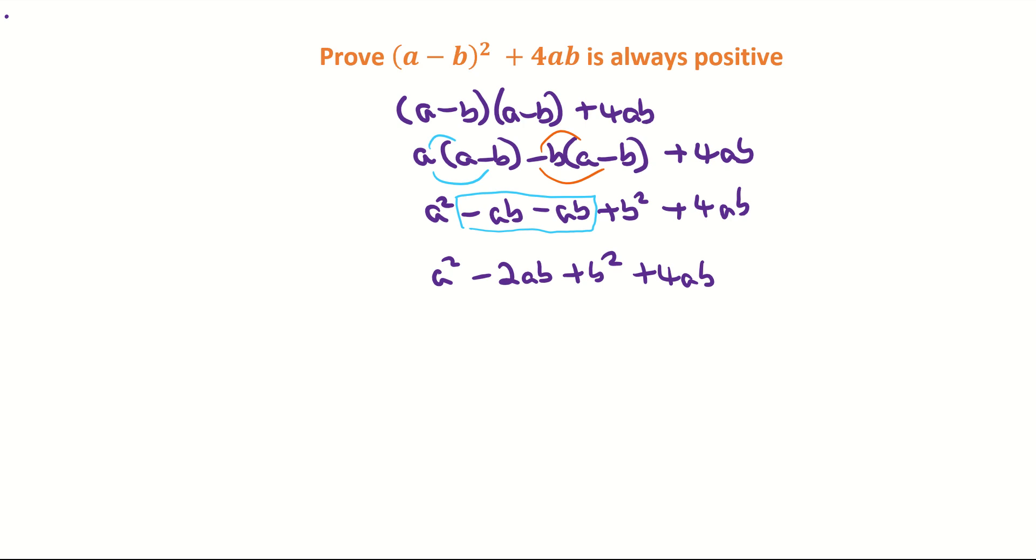Next step now is I'm going to put the -2ab and the positive 4ab together. So -2 plus 4 is making positive 2ab. So a² + 2ab + b².